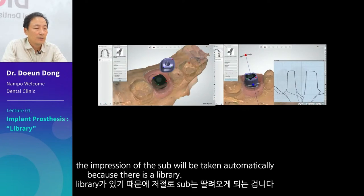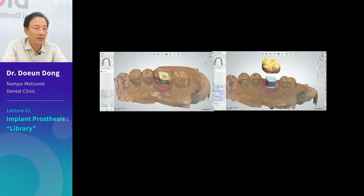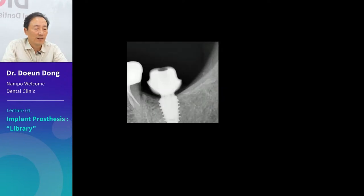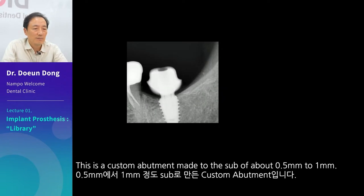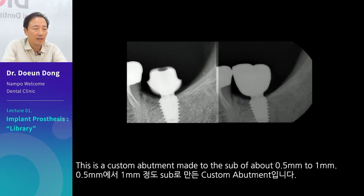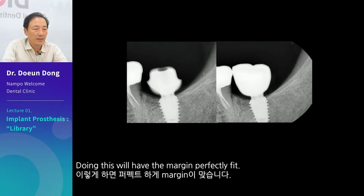In this case, even if we do not scan the sub-gingival margin, the impression of the sub will be taken automatically because there is a library. This custom abutment is made to a sub depth of about 0.5 mm to 1 mm. Doing this will have the margin perfectly fit.